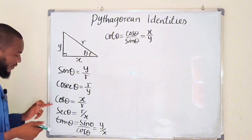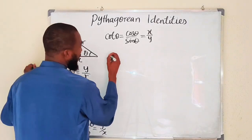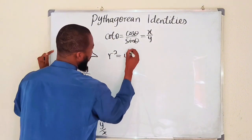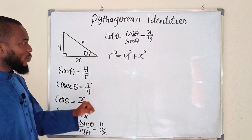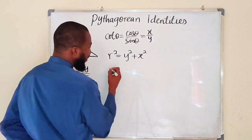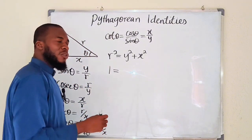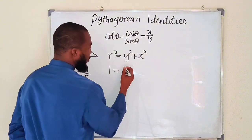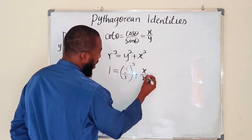So we have all six trigonometric ratios: one, two, three, four, five, and six. Next, let us write the Pythagorean theorem, which states that the hypotenuse squared equals opposite squared plus adjacent squared: r² = y² + x². We are going to divide every single term by r squared. R squared divided by r squared is one, then we have y² / r² plus x² / r², which by laws of indices gives us (y/r)² + (x/r)².